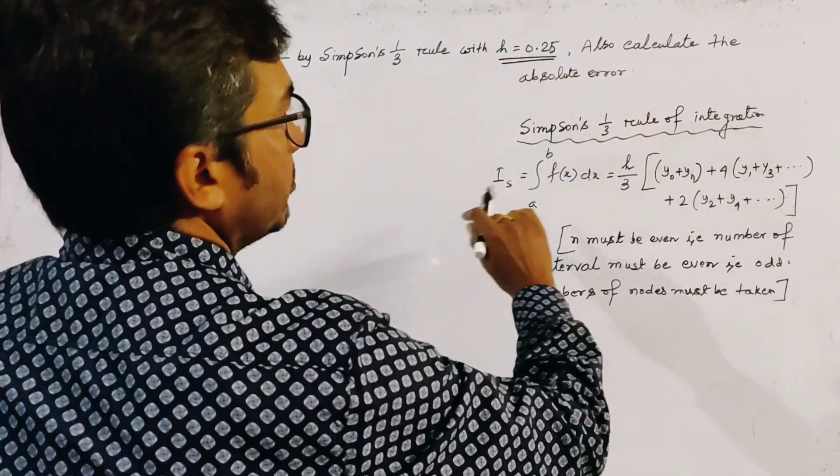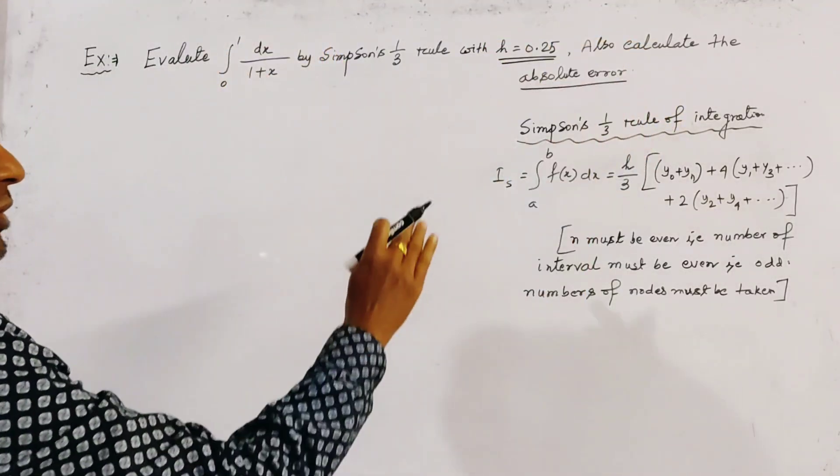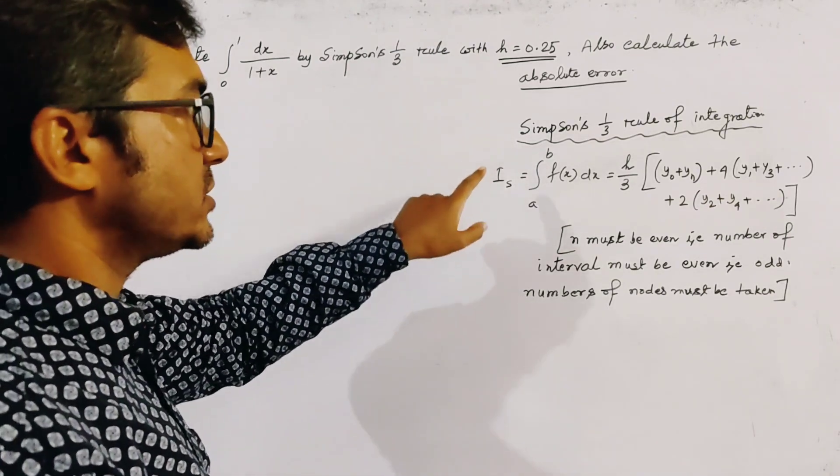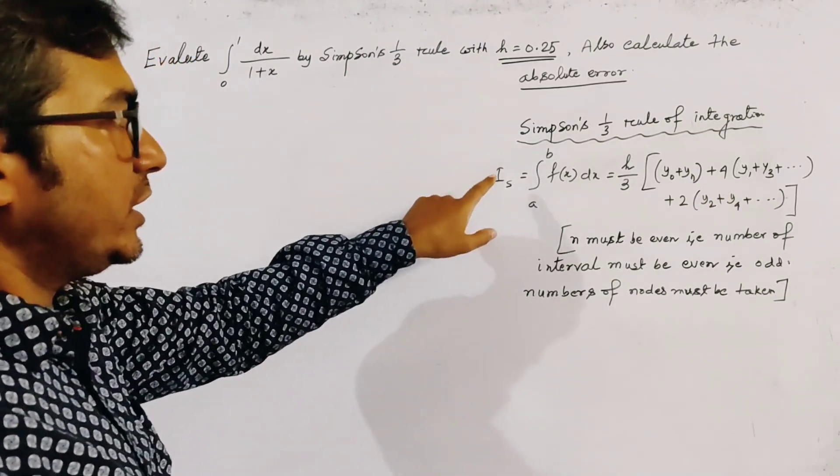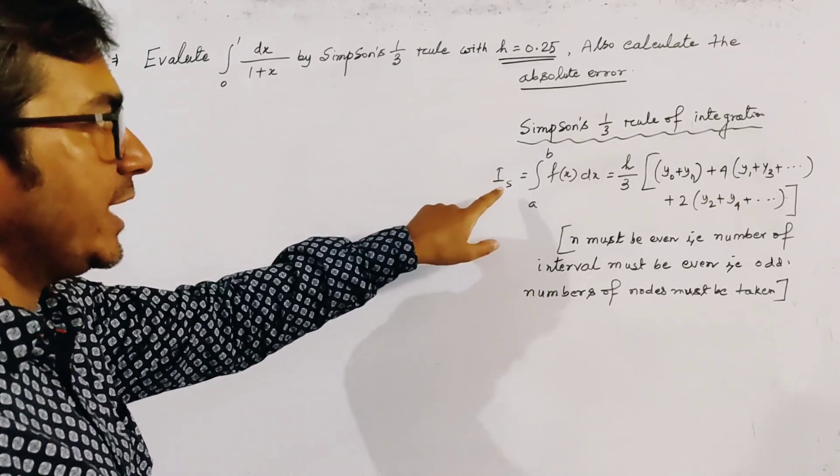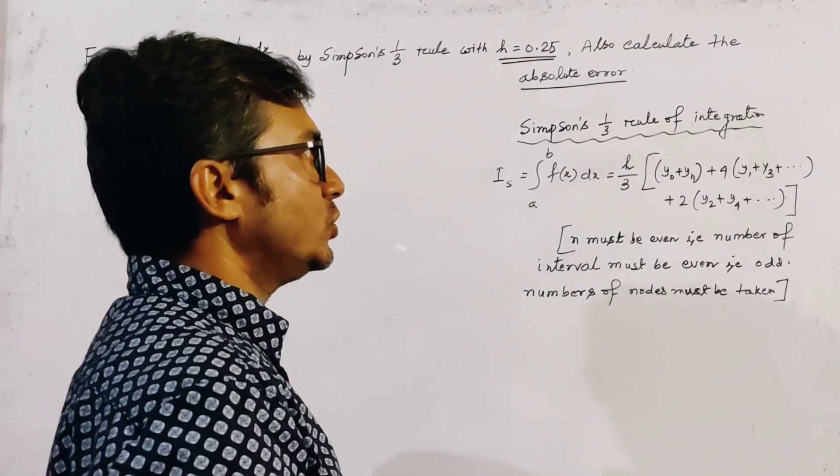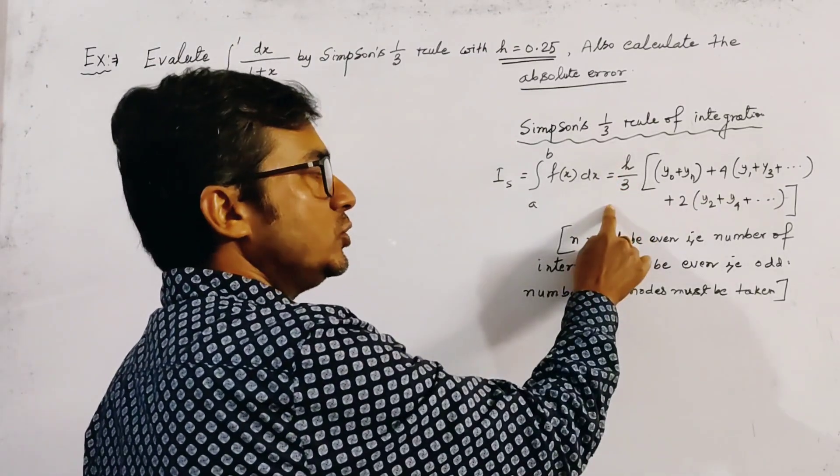Also calculate the absolute error. Here we use Simpson's one-third rule, and this rule gives—generally we write the integration as: the integral from a to b of f(x)dx equals h/3 times...